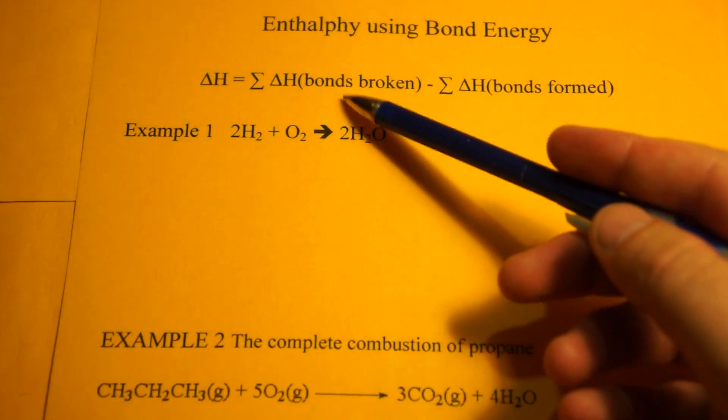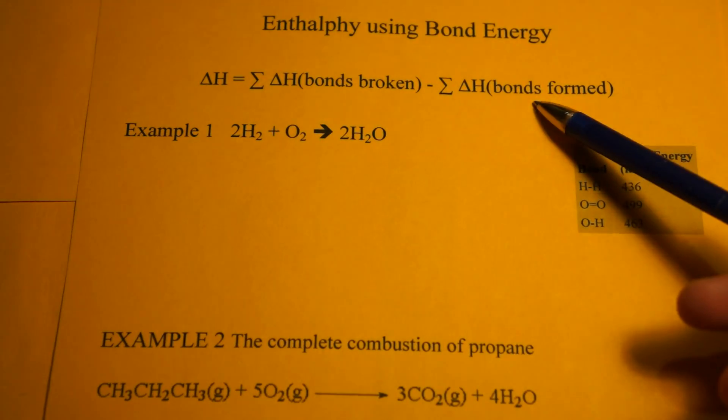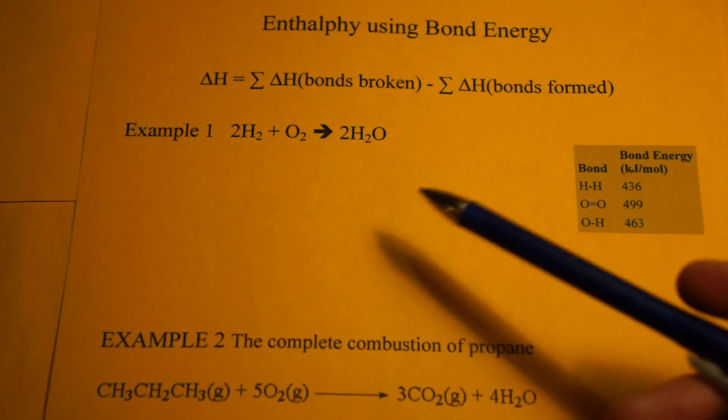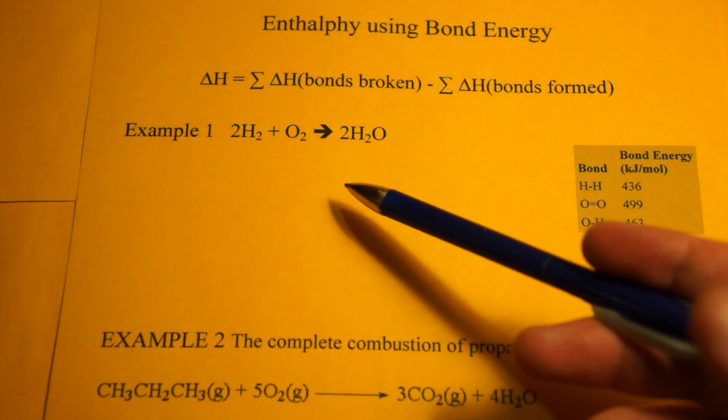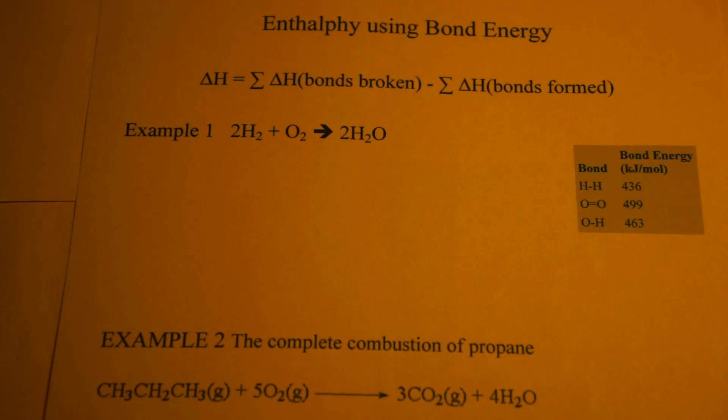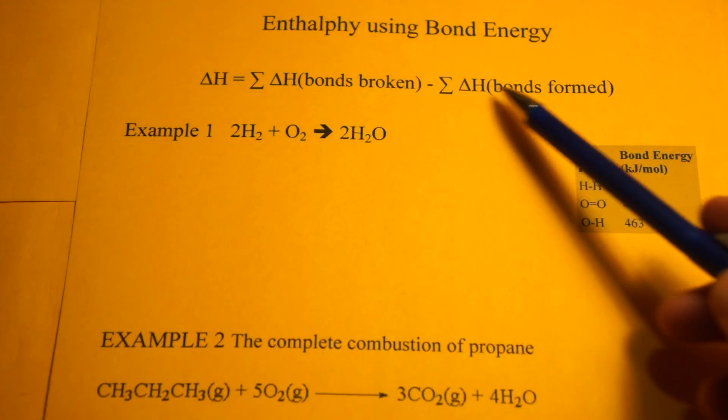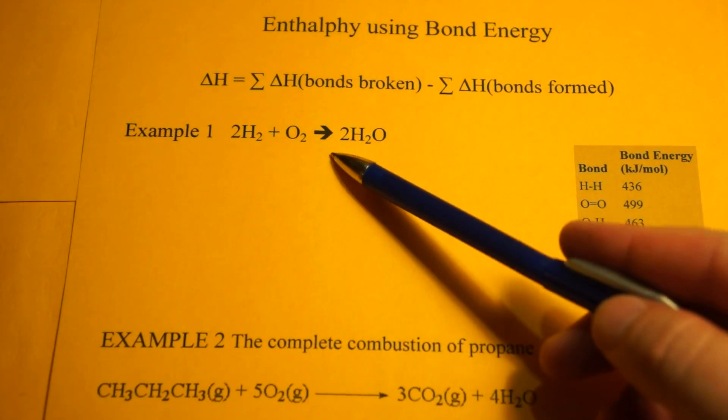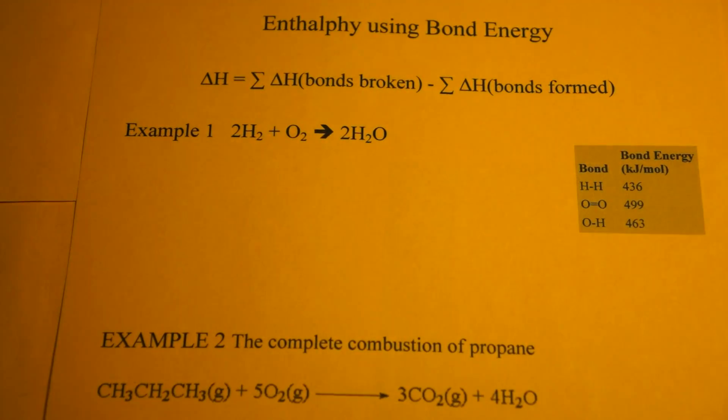Remember, breaking bonds is endothermic, that's positive. Forming bonds is exothermic, that's why this is negative. There's another calculation to do enthalpy using heat of formations, and that's products minus reactants. This is different. Using bond energy, we say broken minus formed, because it's going to be reactants minus products, and we don't want to confuse those.